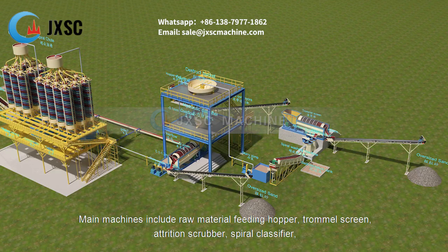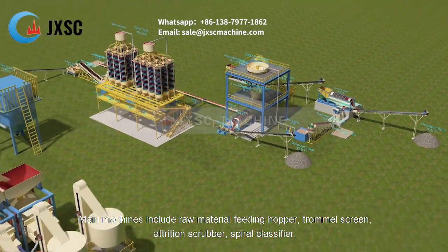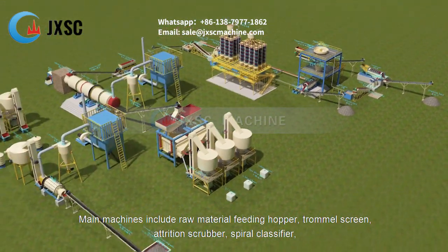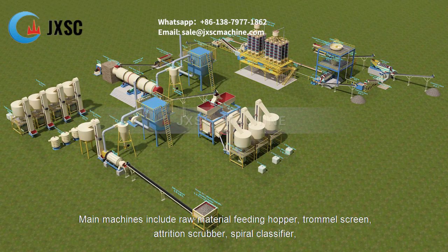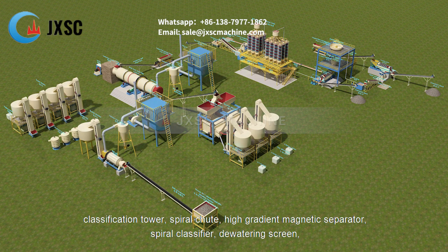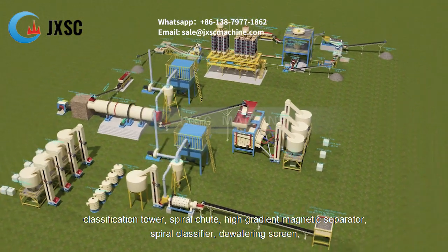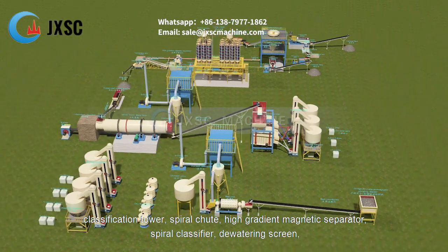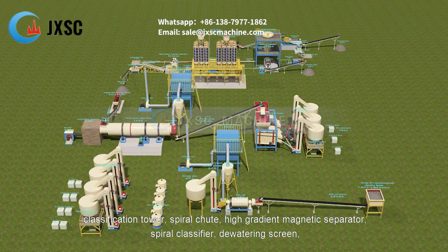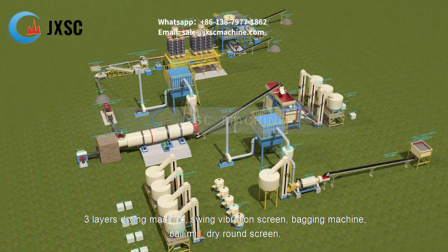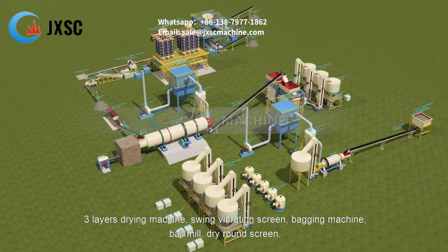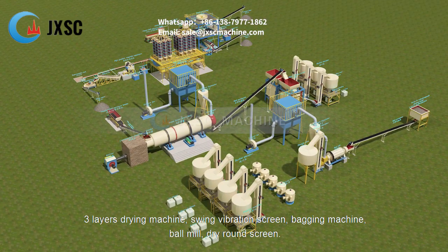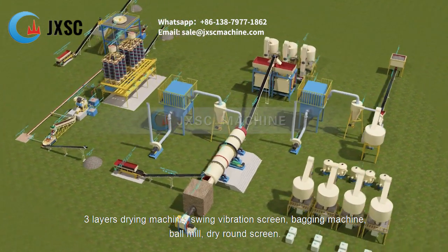Main machines include: raw material feeding hopper, trommel screen, attrition scrubber, spiral classifier, classification tower, spiral chute, high gradient magnetic separator, spiral classifier, dewatering screen, three-layer drying machine, swing vibration screen, bagging machine, ball mill, and dry round screen.